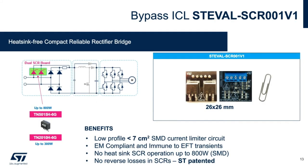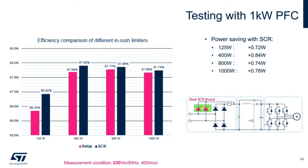To evaluate this solution, ST has a very small daughter board that can be tapped into any input bridge and tested. The board is called STEVAL-SCR001V1 and is orderable through any standard distribution channel. Implemented with the TN5015H-6G SCR in a D2 pack package, it's been proven to operate without a heatsink for supplies up to 800 watts, largely thanks to the patented driving circuit. It's only 26 by 26 millimeters square and is easy to tap into any power supply for evaluation. Here are the results of a one kilowatt PFC tested with the dual SCR board in bypass configuration: from 10% to full load, the SCR solution improves upon the efficiency of a relay-based bypass solution, while avoiding many of the relay drawbacks, with an average savings of about three quarters of a watt.